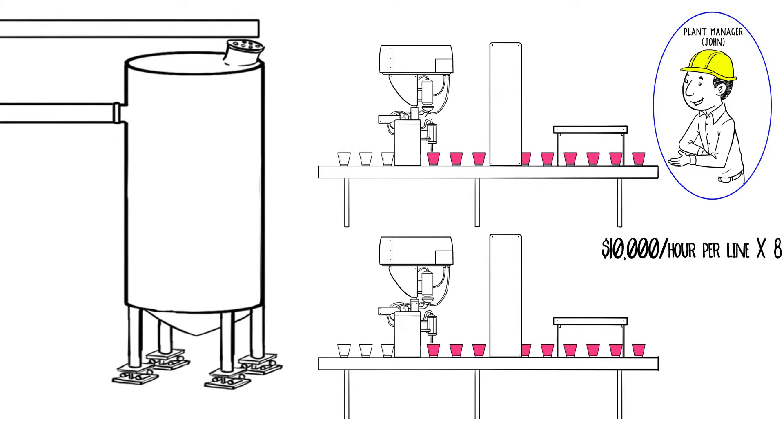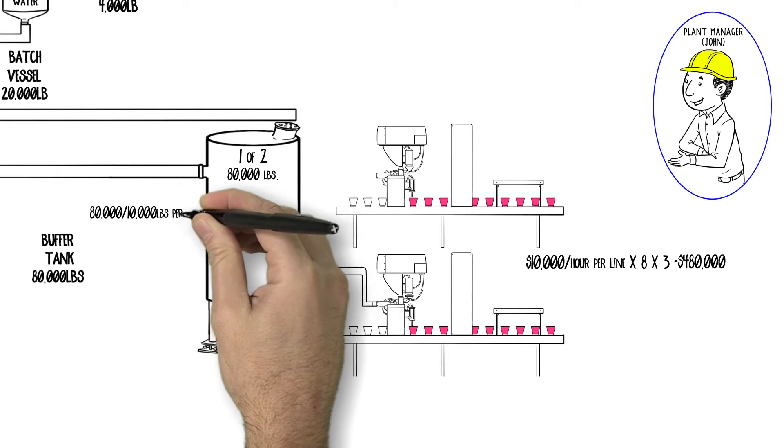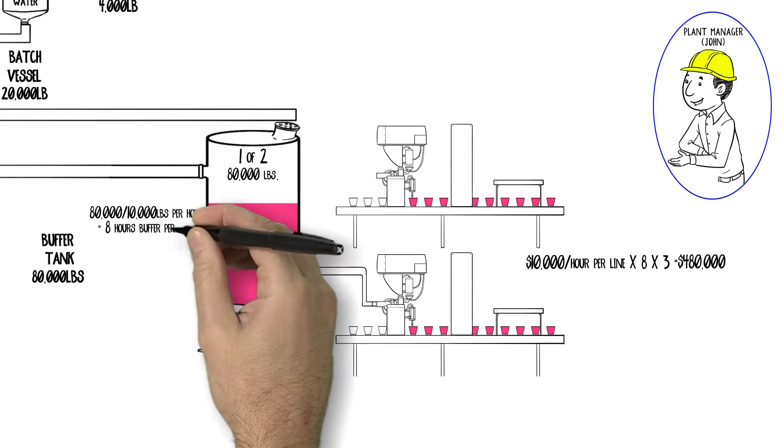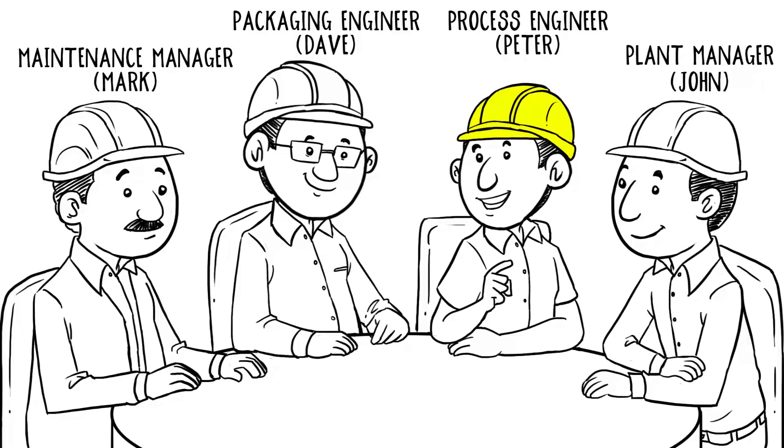But we have two 80,000-pound buffer tanks, one on each packing line. At a packing rate of 10,000 pounds per hour, we should have at least eight hours of buffer per line. After eight hours, the buffer tanks were emptied, and we couldn't start refilling for another eight hours.